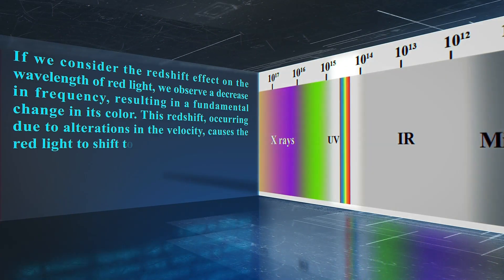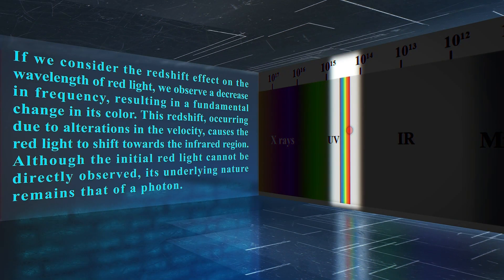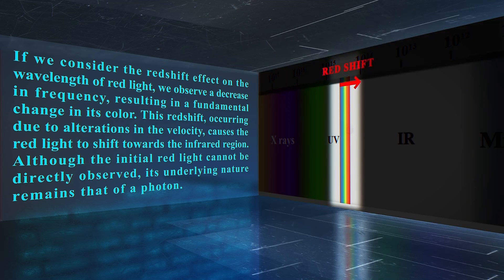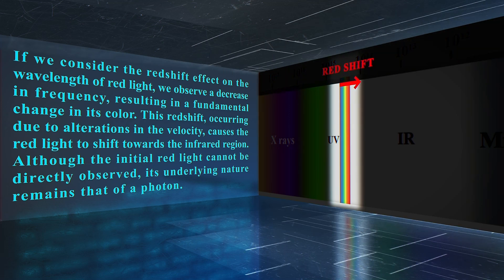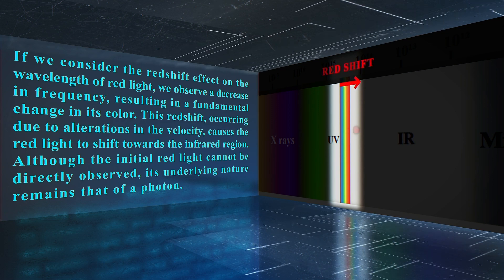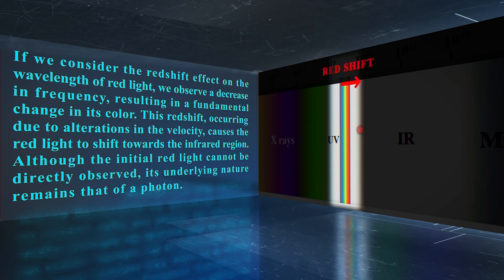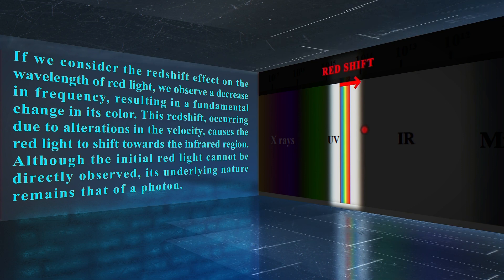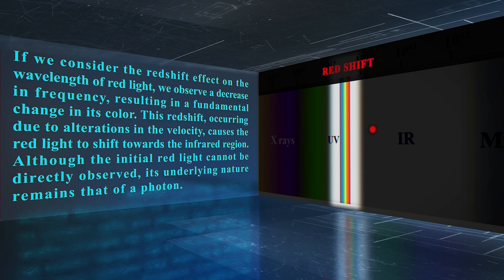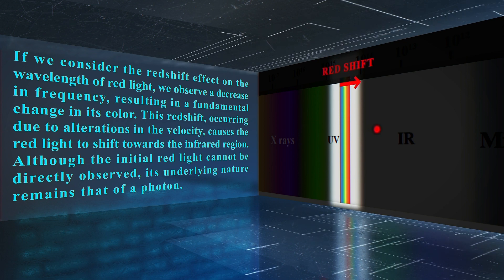If we consider the redshift effect on the wavelengths of red light, we observe a decrease in frequency resulting in a fundamental change in its color. This redshift, occurring due to alterations in the velocity, causes the red light to shift towards the infrared region. Although the initial red light cannot be directly observed, its underlying nature remains that of a photon.